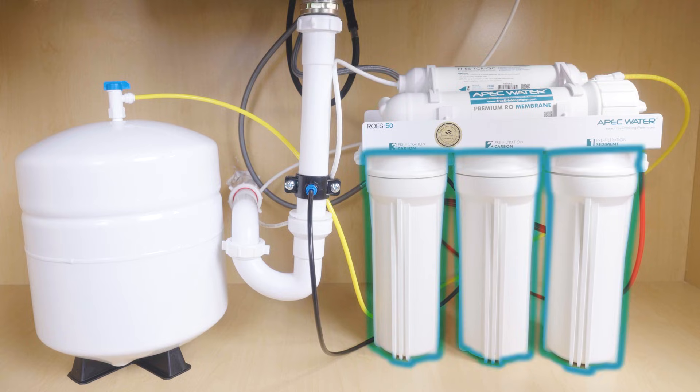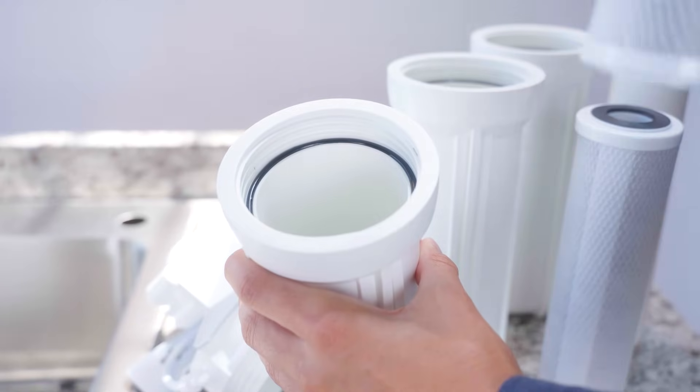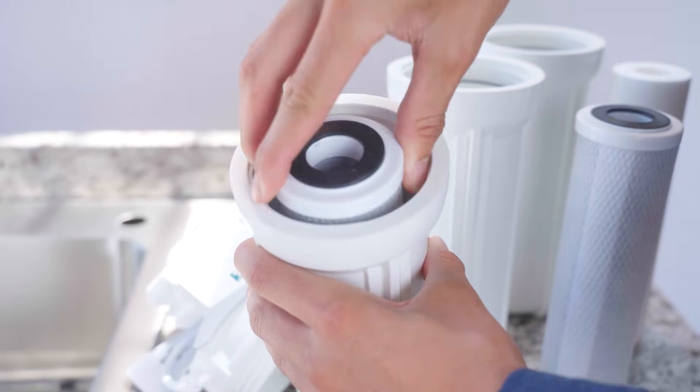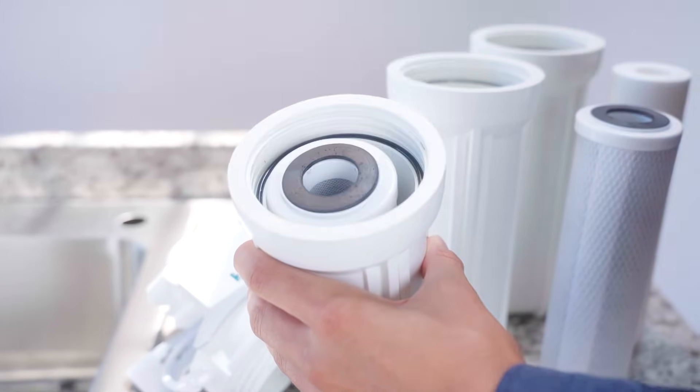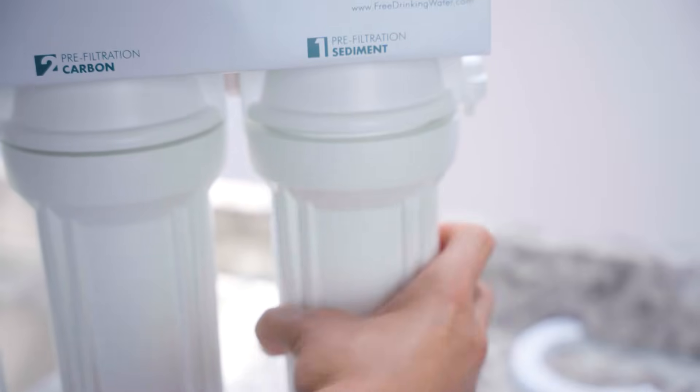Time to load in the filters. Unscrew each housing and drop in the right cartridge. Make sure the O-rings are clean and properly seated. Tighten by hand, firm but not too tight. Use the wrench for just a quarter turn at the end. Don't overdo it. Cracks aren't worth it.